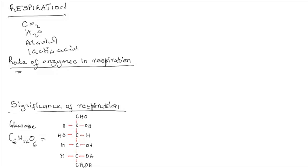Secondly, the enzymes slow down the oxidation reactions so that energy is produced continuously and in small quantities without damaging the cell. The difference between respiration and combustion is the rate at which energy is released. In combustion, energy in the form of heat is released rapidly, but in respiration, this energy is released in small quantities and continuously. It is the enzymes that ensure this takes place by slowing down the oxidation process.